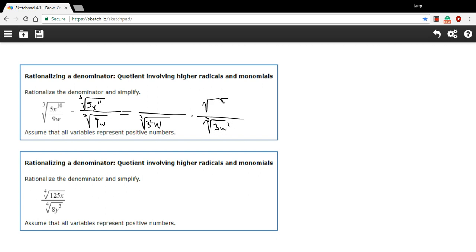So that's why I chose to multiply by the cube root of 3w squared. Of course, we have to multiply by 1, so we're not actually changing the fraction. So on the top, we'll also multiply by 3w squared. And our top here is the cube root of 5x to the tenth. So far, so good. Let's go ahead and do the multiplication.